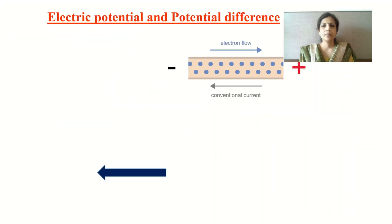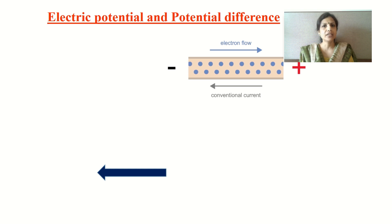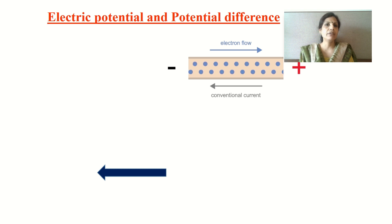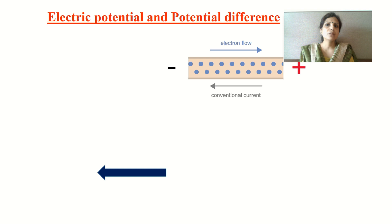You can see the continuous flow of electrons through a copper wire. When electrons flow continuously like this through a copper wire, we say that there is a flow of electric current. This continuous flow of electrons through the copper wire is possible only when we attach a cell or a battery to the two ends of a conductor.